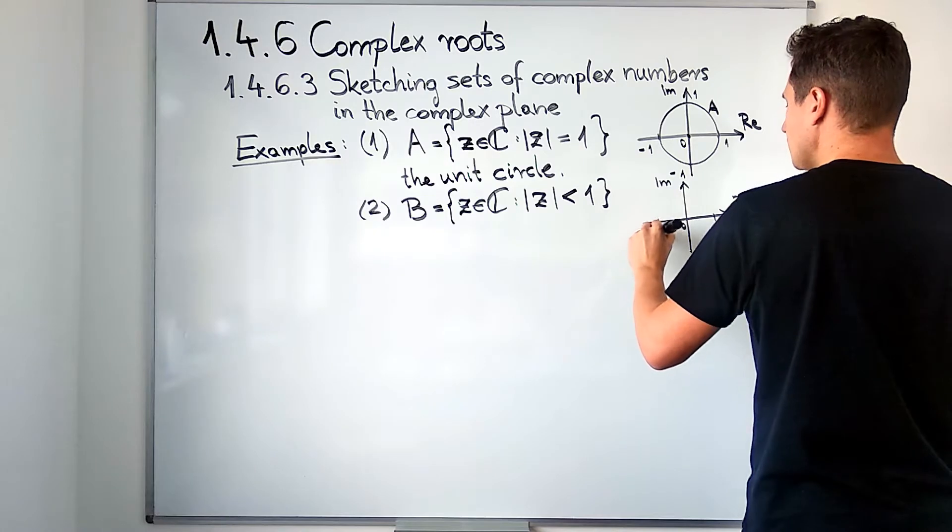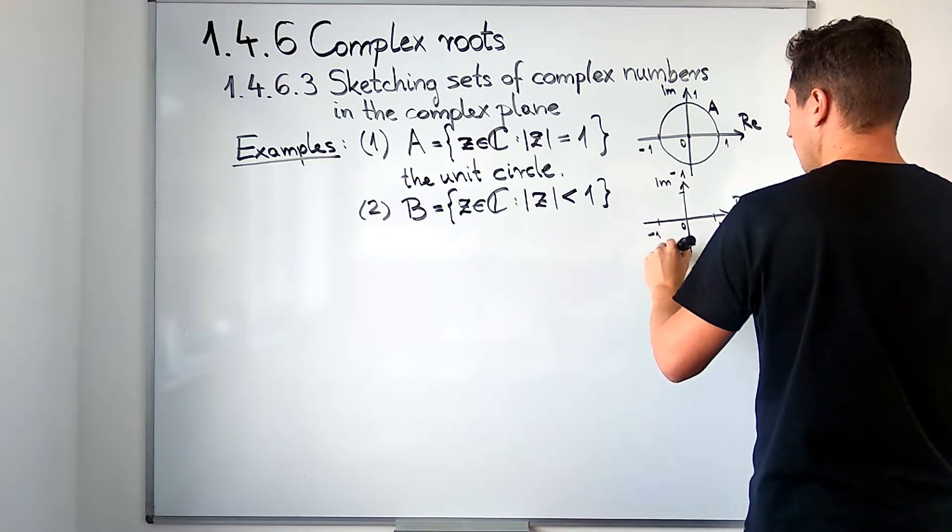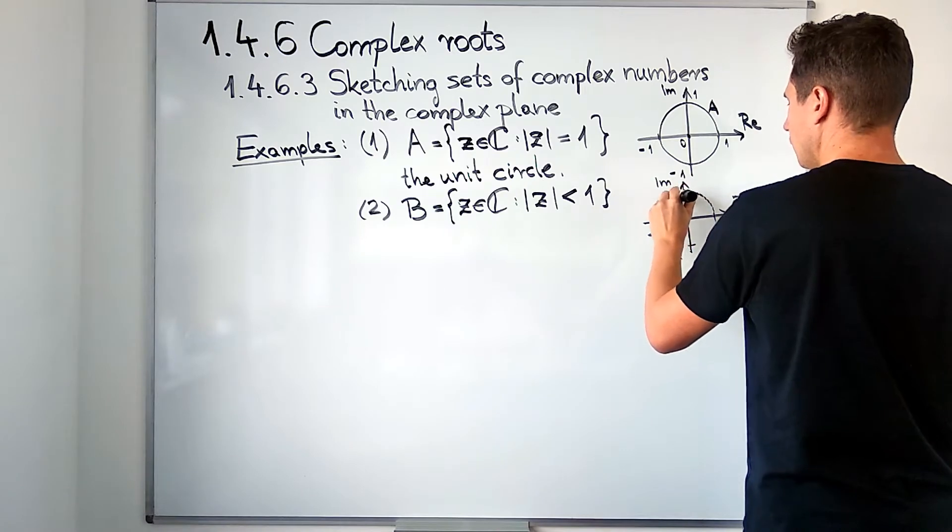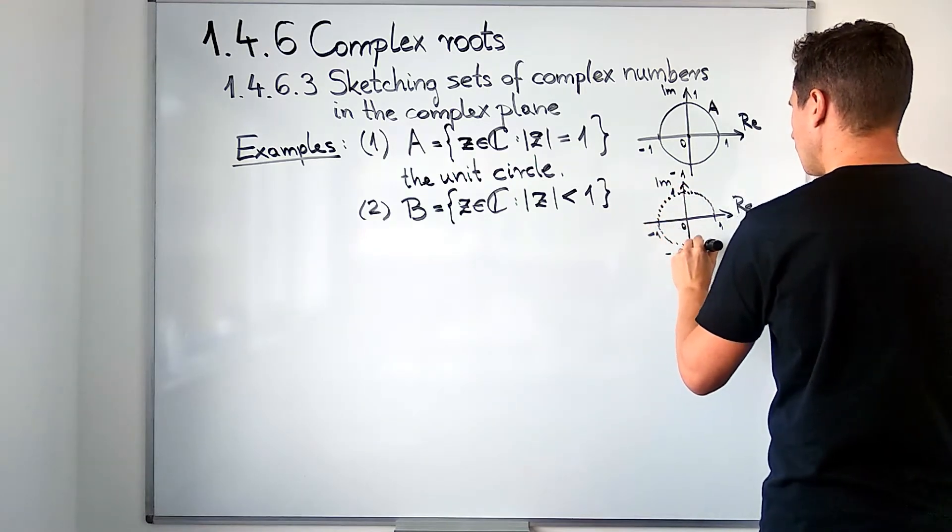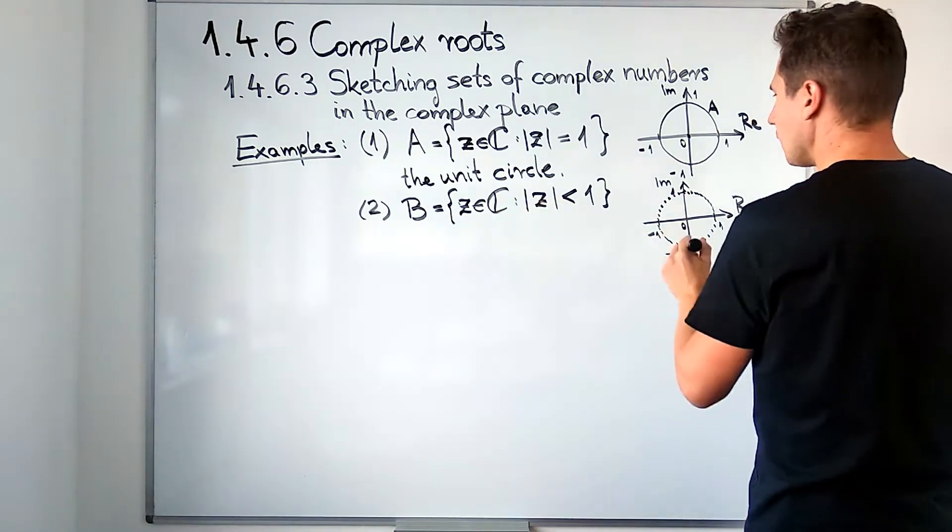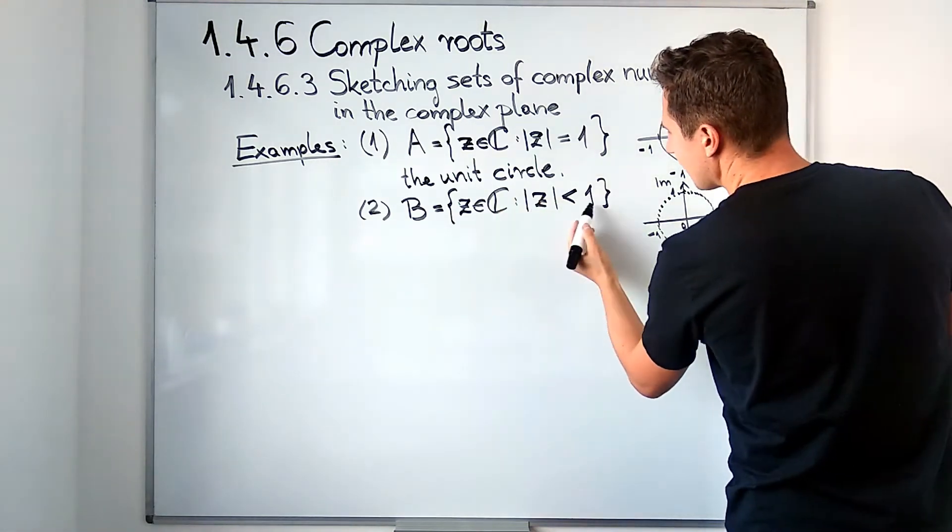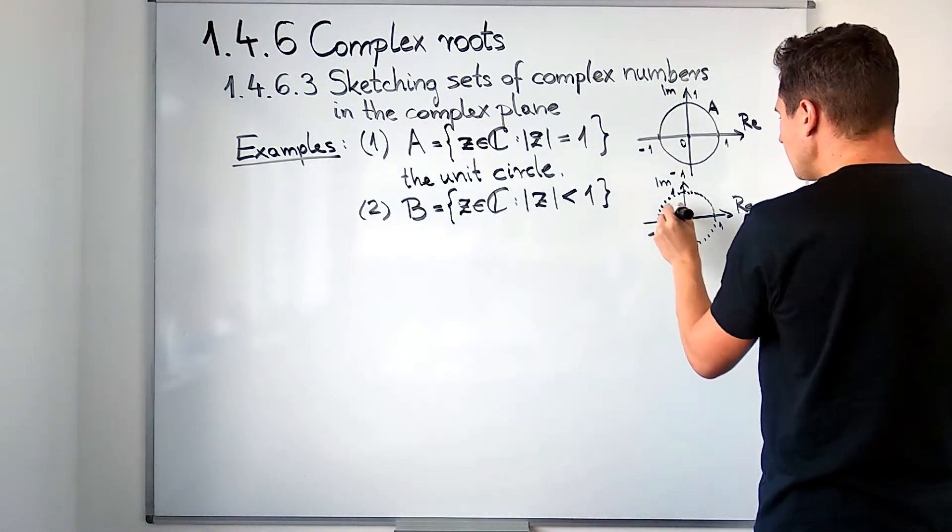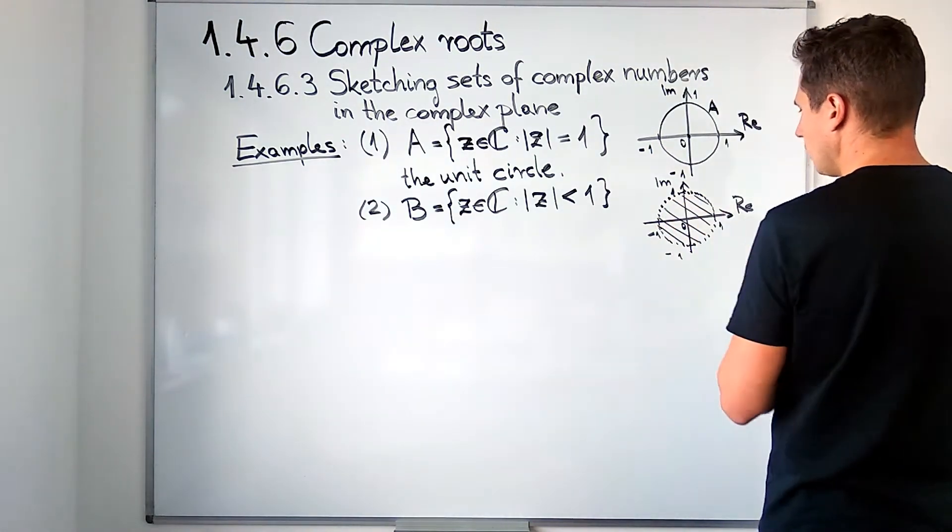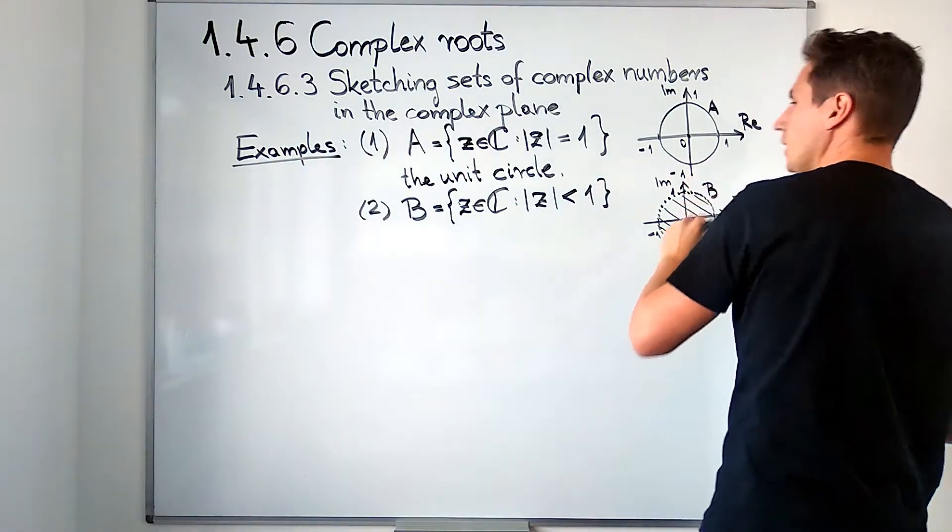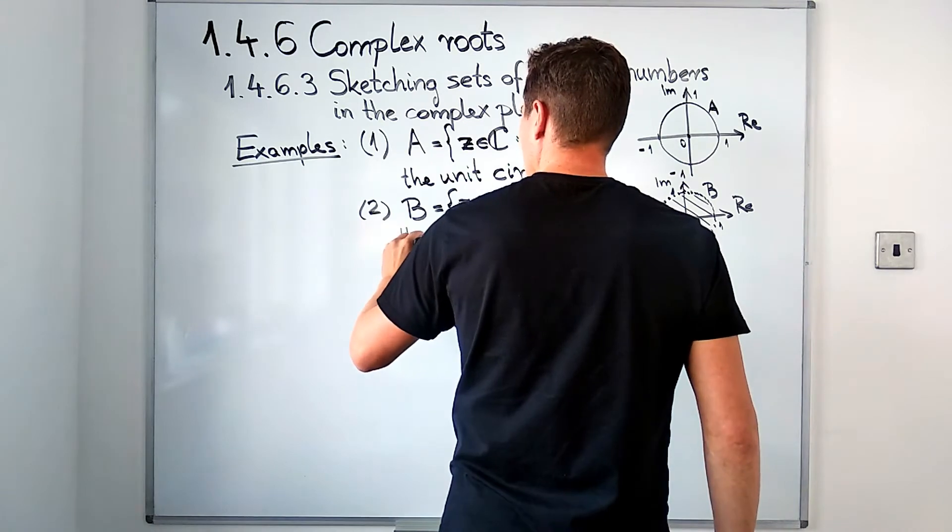If I just quickly sketch the unit circle, then let me draw this with a dotted line, what we are looking at is numbers that are less than a unit of distance away, which means that it's the interior of this circle that we are looking at.